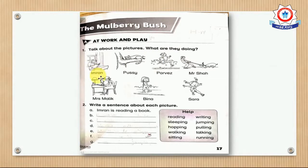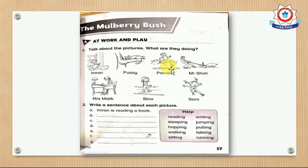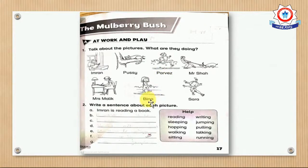First picture: the boy's name is Imran. What action is he doing? He is reading. Next picture: the cat's name is Pussy. Pussy's action is sleeping. Next picture: the boy's name is Parvayze. Parvayze is running.